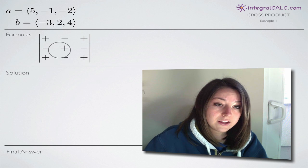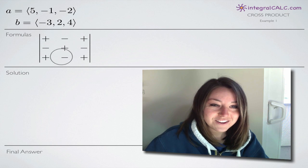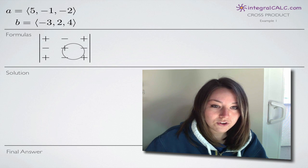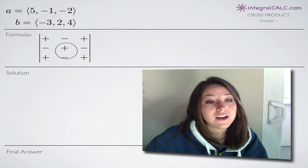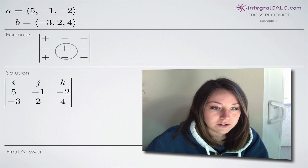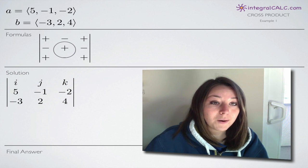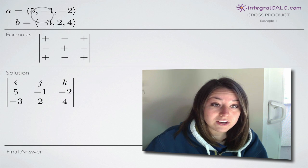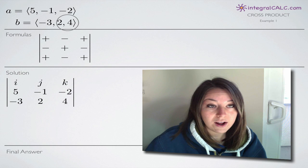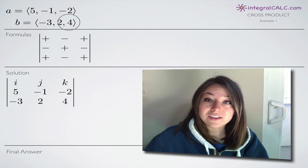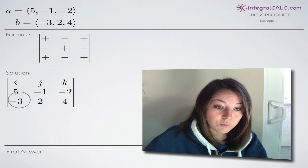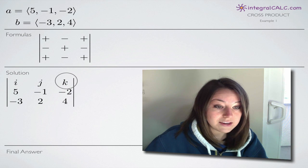The formula we're going to need is a third-order determinant grid of positives and negatives that tells us what signs to put on our second-order determinants. This problem isn't too hard, especially when you're given two vectors with the numbers already broken out. The first thing we do is build a third-order determinant matrix.